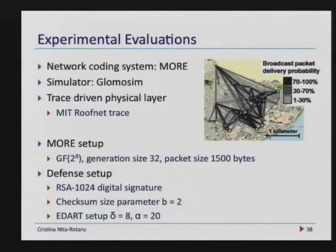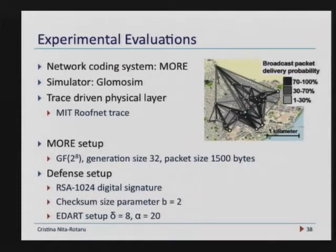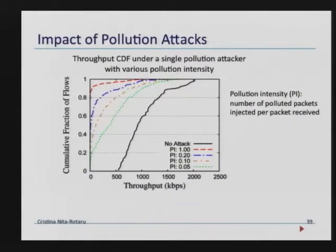I also wanted to show you the experiments because we implemented everything. This is the picture of the Rufnet testbed at MIT. From this project we can get the link qualities of an existing testbed. We take those link qualities and use them in the GlomoSim simulator, which gives us a network coding system running in a simulator but with link qualities that come from a real testbed. We use the implementation of MORE for the dissemination of checksums — the only place where we need digital signatures, because we do need the source to sign the checksums.